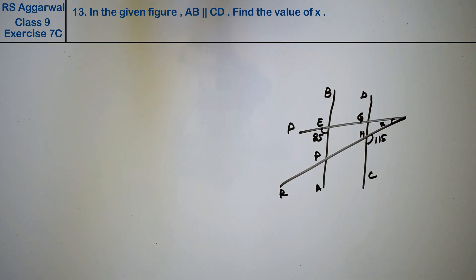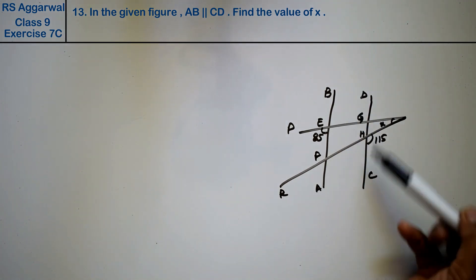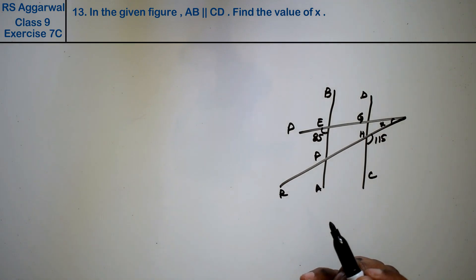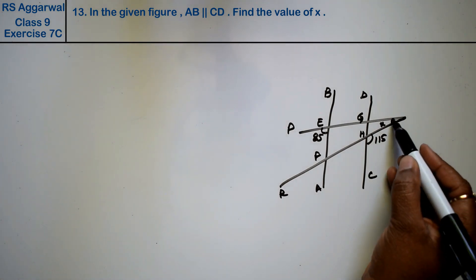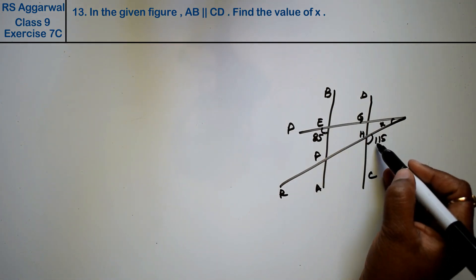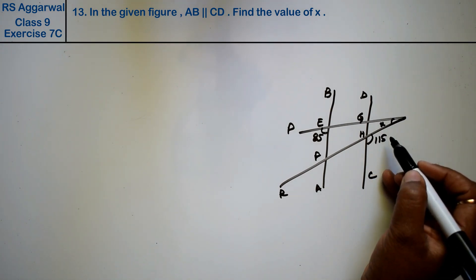Let's do question number 13 of exercise 7C, lines and angles. The question is: in the given figure, AB is parallel to CD. Find the value of x. This is x, this is 85 degrees, and this is 115 degrees.